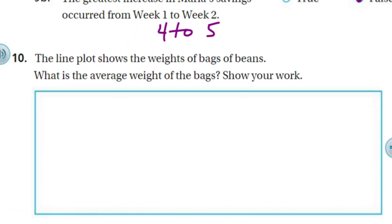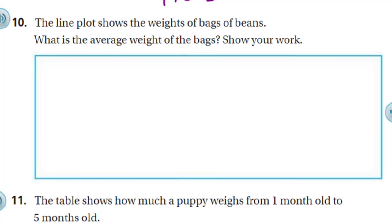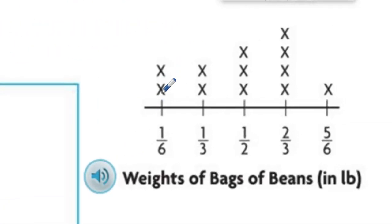Let's take a look at question number 10. Here it says the line plot shows the weights of bags of beans. What is the average weight of the bags? Show your work. We're going to do this a little different than we did in review one — because we have decimals, let's keep these all as fractions. The important thing about finding average weight is: add all of the data, all of the items, and then divide by the number that you have. We need to add two thirds four times — like making four copies, which means we can multiply. Same with one half: make three copies of one half.